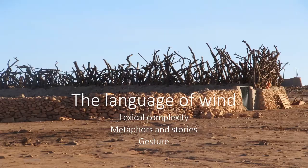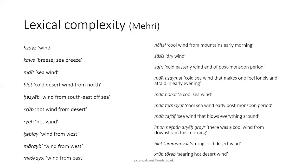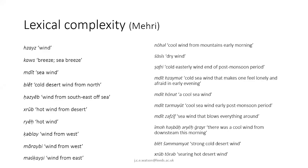Looking at the lexical complexity: in the left-hand column you have different terms for wind in Mehri — depending on where the wind comes from, depending on the heat of the wind. Several different winds all come from the same direction but vary greatly. On the right-hand side there are more nuances: dry winds, a cold easterly wind, a post-monsoon period wind, a cool sea breeze 'slijj', a strong cold desert wind 'mugget'. You'll notice that the translation always has just 'wind' or 'breeze' plus an attribute, whereas Mehri has all these distinct terms.